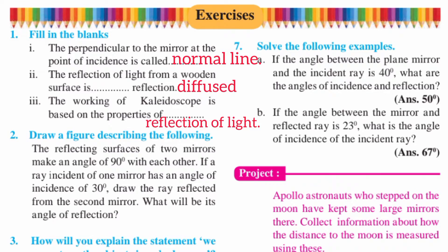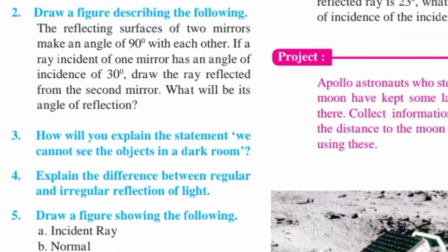First, fill in the blanks. First: the perpendicular to the mirror at the point of incidence is called the normal. Second: the reflection of light from a wooden surface is diffused reflection. Third: the working of a kaleidoscope is based on the properties of reflection of light.